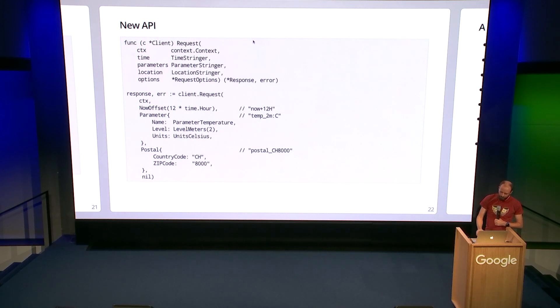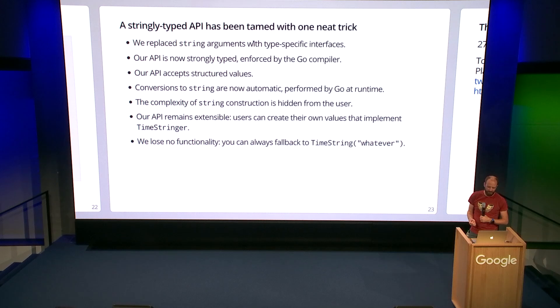Now, what have we achieved by doing this? So what we've done is to replace our string arguments with type specific interfaces. Our API is now strongly typed. The Go compiler will catch it if anything is out of place or the wrong way around or cannot be converted. We get a much more literal, much more easy to read structured values that we can use. And interestingly, the conversions are now automatically done by Go at runtime. We're no longer creating the strings ourselves. The Go runtime will say, okay, I've got a time stringer, I'll call the time string method on it, and I'll get the string back myself. We, as users, don't have to worry. These conversions are automatic. The complexity of the construction is hidden from the user. We can give these nice high-level structural types, and any advanced logic required to turn that into a string is fully transparent to the user of the library.